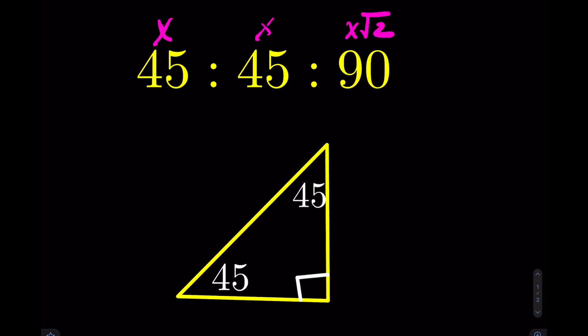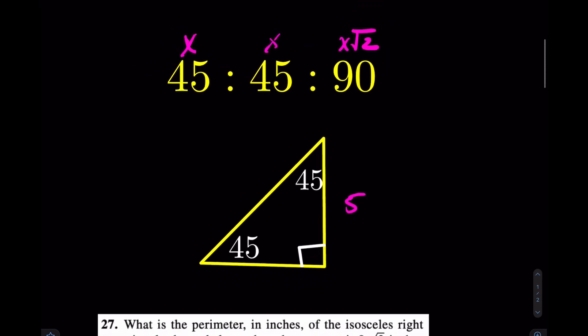This works for every single 45, 45, 90 triangle. And the idea here is that this would be 5. Well, if that side is 5, then this side is also 5. And if those two sides are 5, then opposite of the 90 would be 5 root 2. So that's the idea of 45, 45, 90.